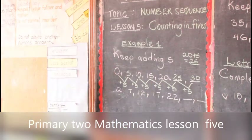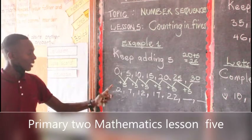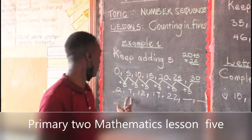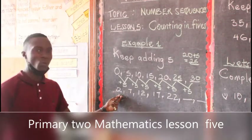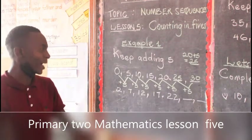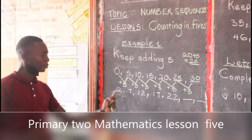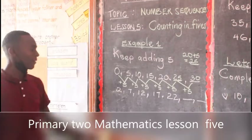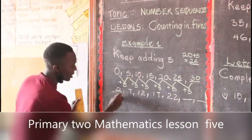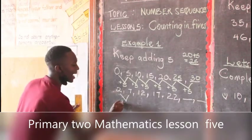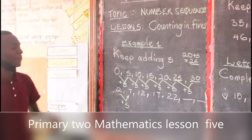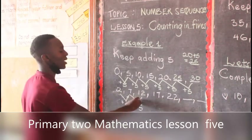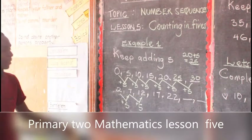We are still adding — from 2 to 7 to 12 to 17 to 22. What is the sequence here? Someone started from 2 and went to 7. Count how many numbers were skipped from 2 to 7: 3, 4, 5, 6, 7 — that means 5 numbers were skipped. So from 2, someone added 5 to get 7. From 7, someone also added 5 to get 12.